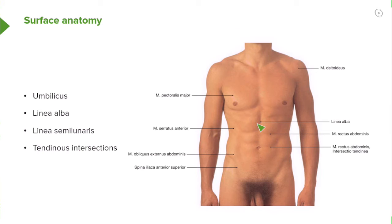Additionally, we have an area here that represents a furrow or depression. As you proceed inferiorly toward the pubic bone, you'll see that it curves inwards. Similarly, we have the same thing occurring on the opposite rectus abdominis on this lateral aspect, and again it will curve inwards as you proceed inferiorly. This demarcates or represents a line referred to as the linea semilunaris.